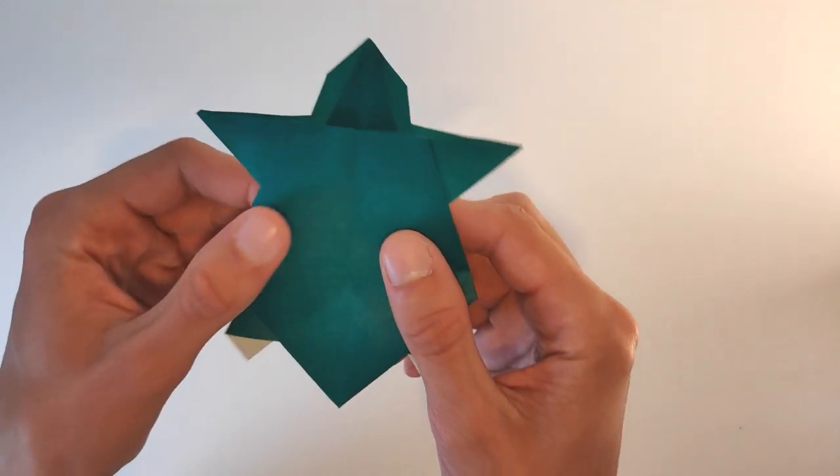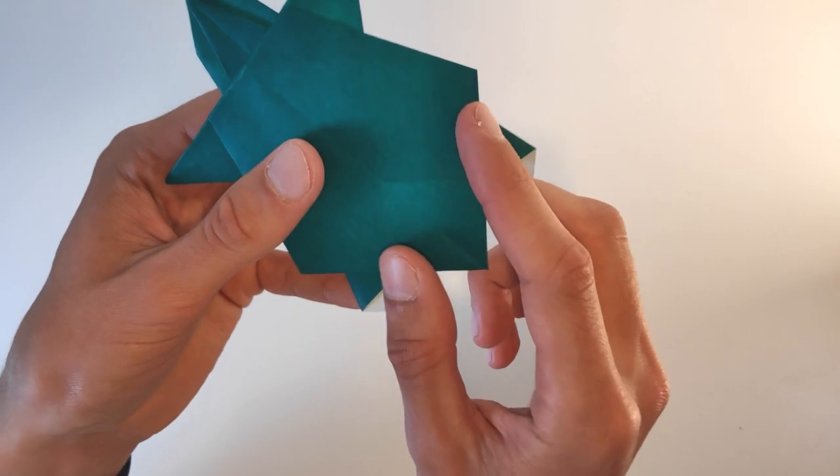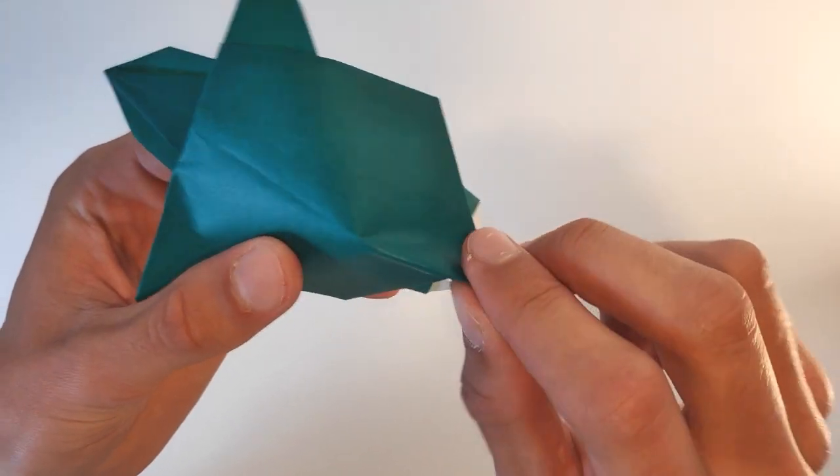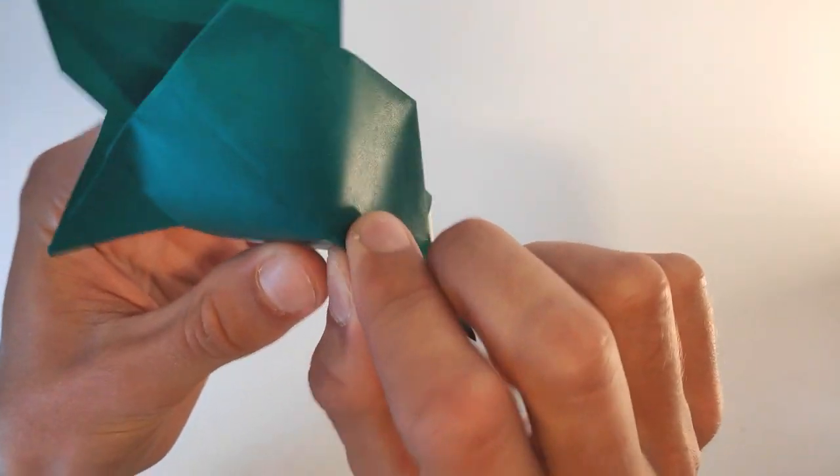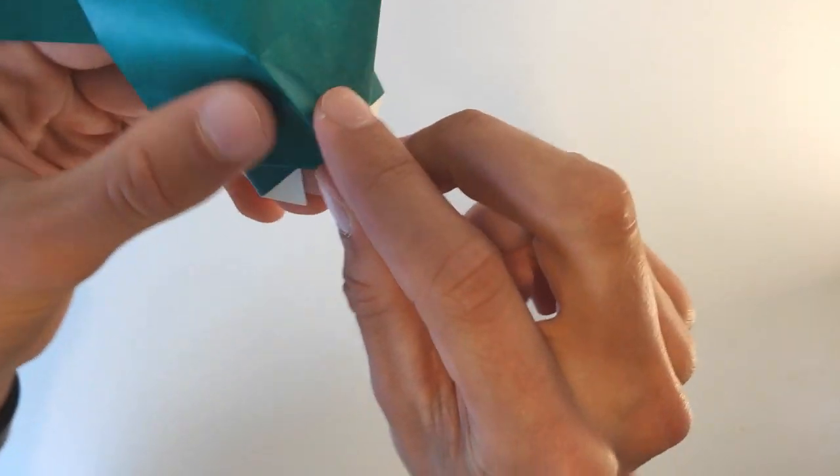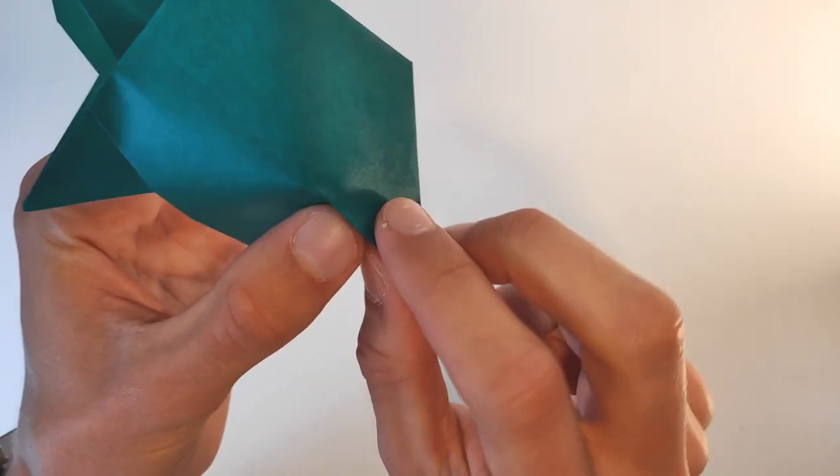Now turn the model over. And as you can see, it almost looks like a turtle. Now the only thing we have to do is make a mountain fold in the middle. And fold like this to make the model look 3D.